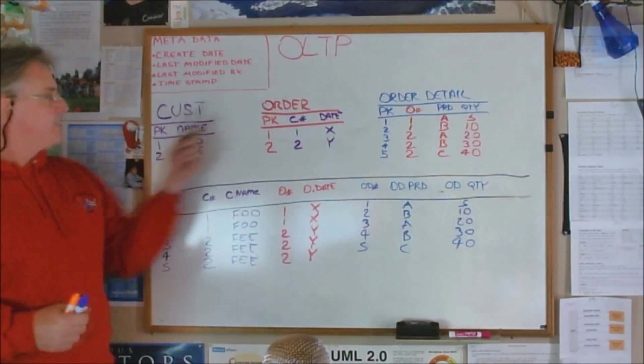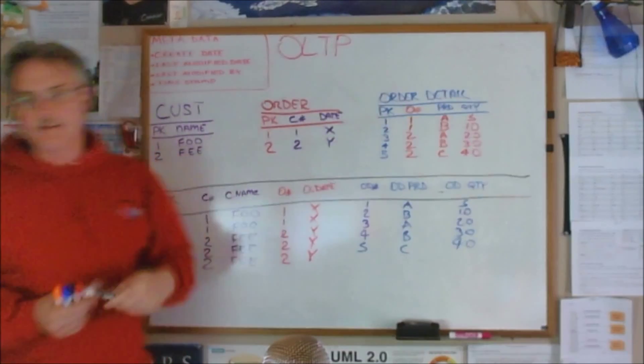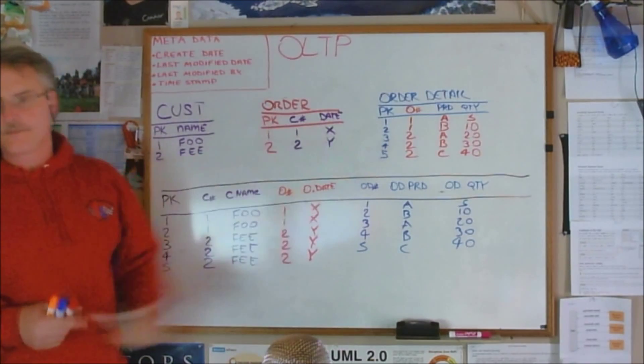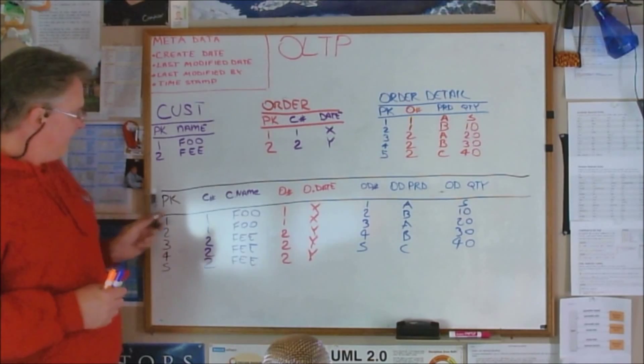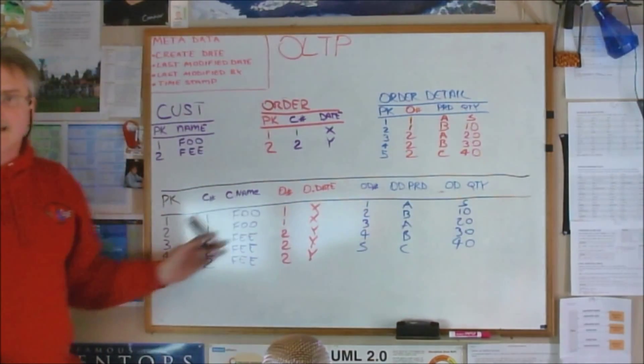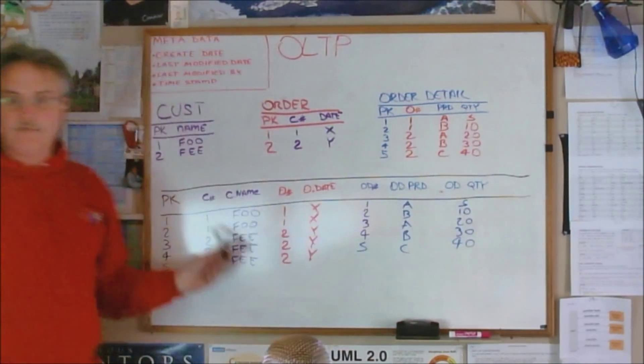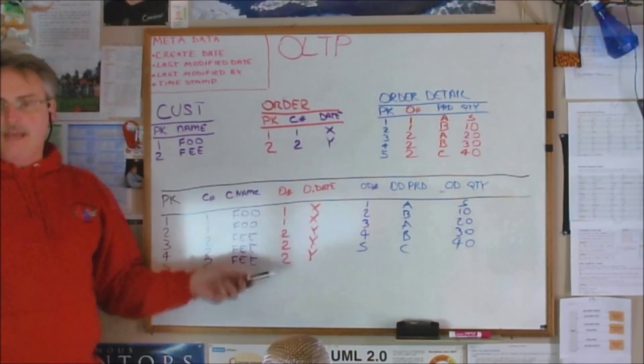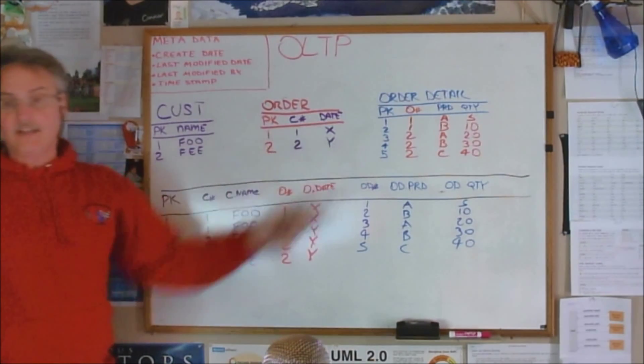Up top we have a customer table, order table, and a detail table, and I tried to break them out in colors. Then down here in this section below, this is the denormalized nightmare that you want to stay away from. This looks pretty bad but this is very simplistic. In a real world this would be horrible.